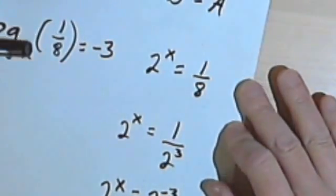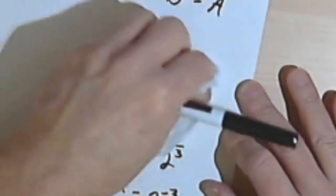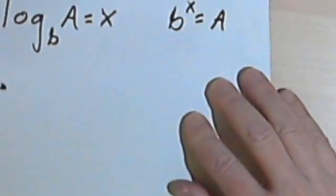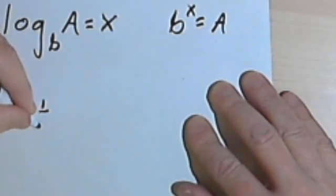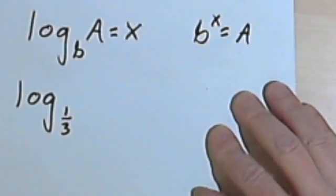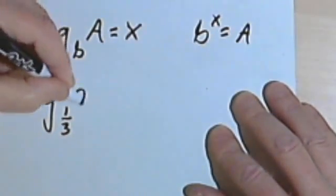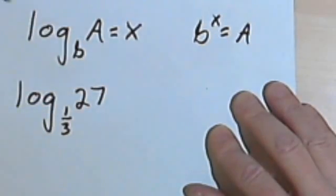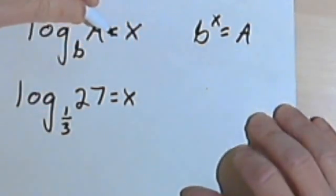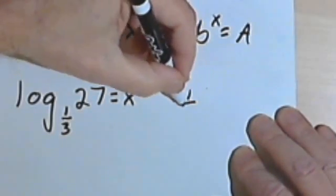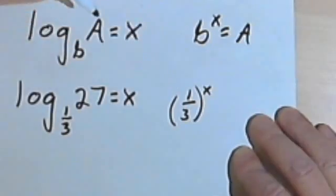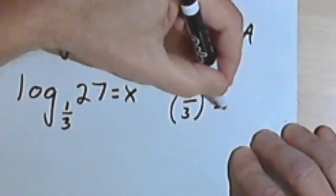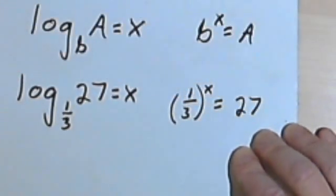Let's try one with a fraction as the base of the log. So what if I have the log base 1/3 of 27. So I'm going to say that equals x, and that means that 1/3 raised to the x power equals 27.